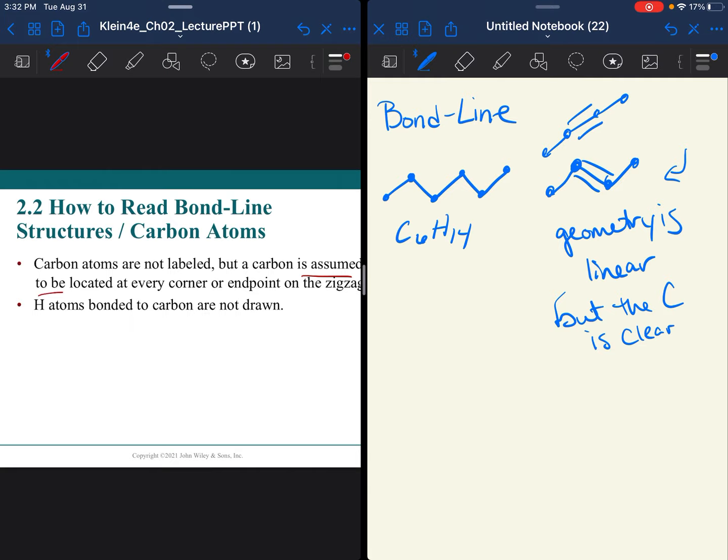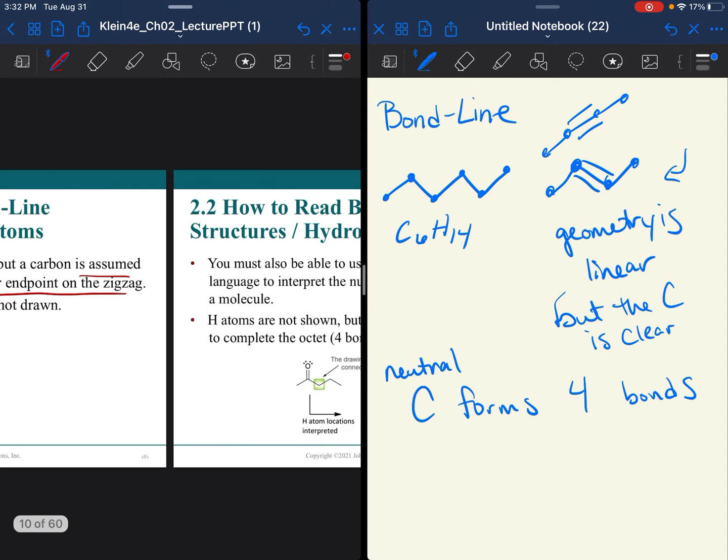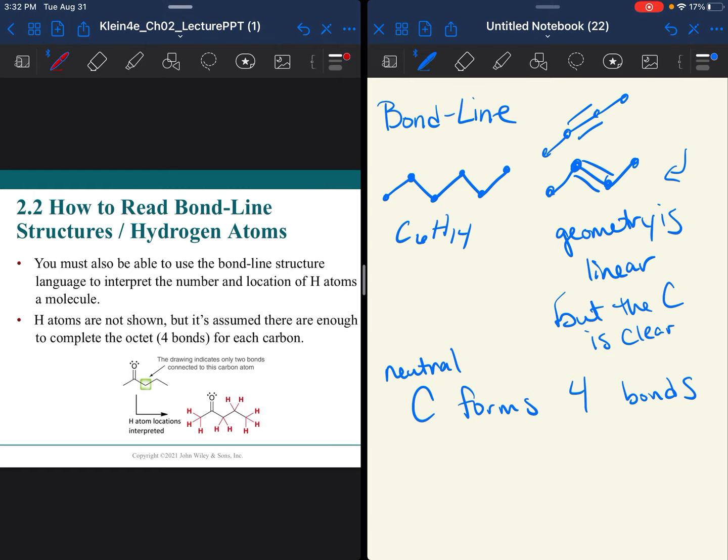The carbon atoms are not labeled, but as I said, they're assumed to be at the corner or end point on the zigzags where two bonds come together, and the hydrogens are left out. Why is that? It's because carbon, when it is neutral, forms four bonds. Just like hydrogen forms one, neutral carbon forms four. So if we have the bonds drawn, we want them to add up to four. If they don't add up to four, whatever is left is hydrogen.